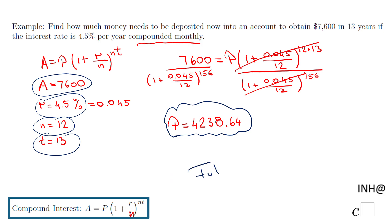You may hear problems like this: future value. I want a future value of $7,600, how much money do I need to deposit? If you enjoyed this example, don't forget to click the like button and come back to C Squared for more help. Thank you.